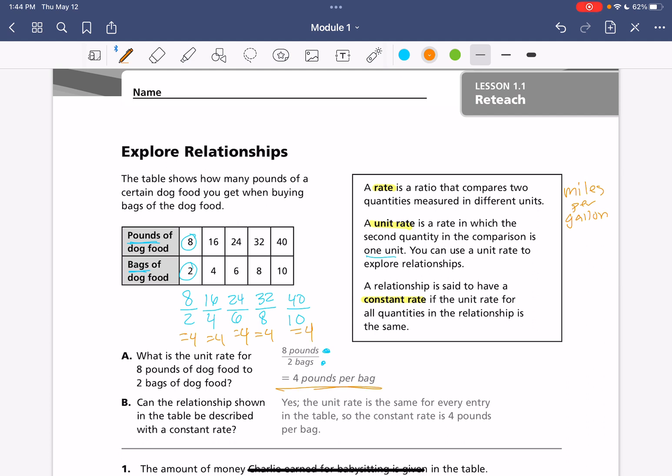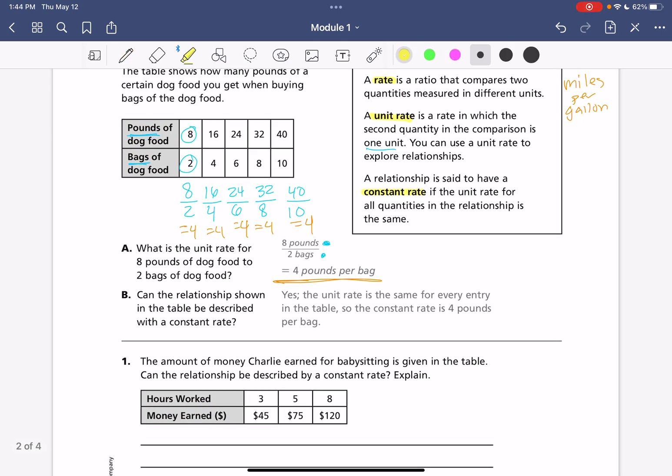Okay. And that's what we found here. Because each one of these ends up equaling 4, that means it has that constant rate that we talked about in our vocabulary.